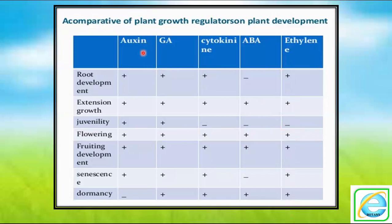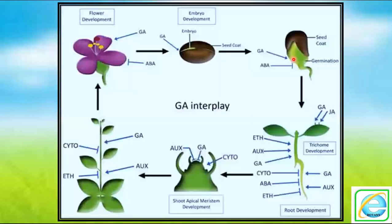These are the comparative roles of the five different hormones — auxin, gibberellic acid, cytokinin, abscisic acid, and ethylene — shown in a chart indicating the various hormones and their roles.